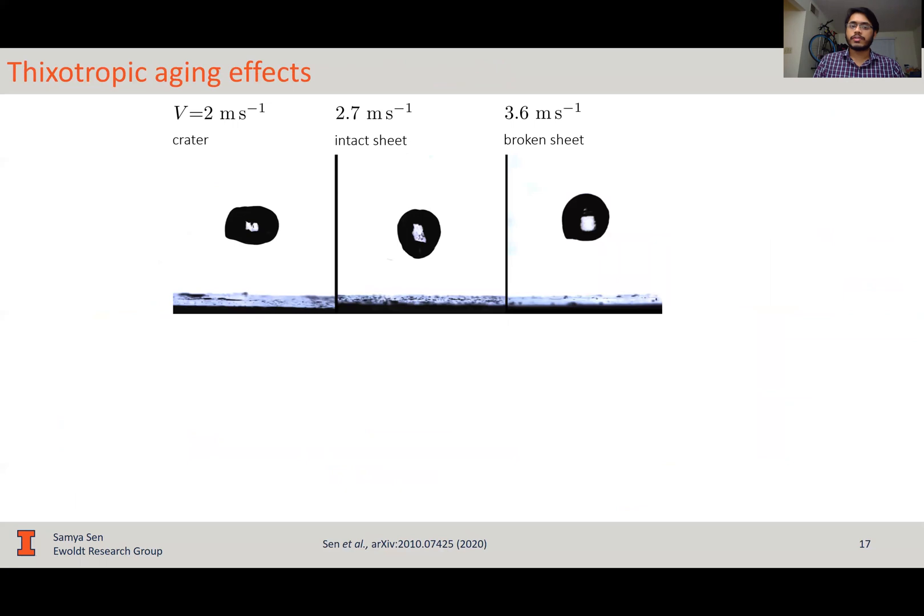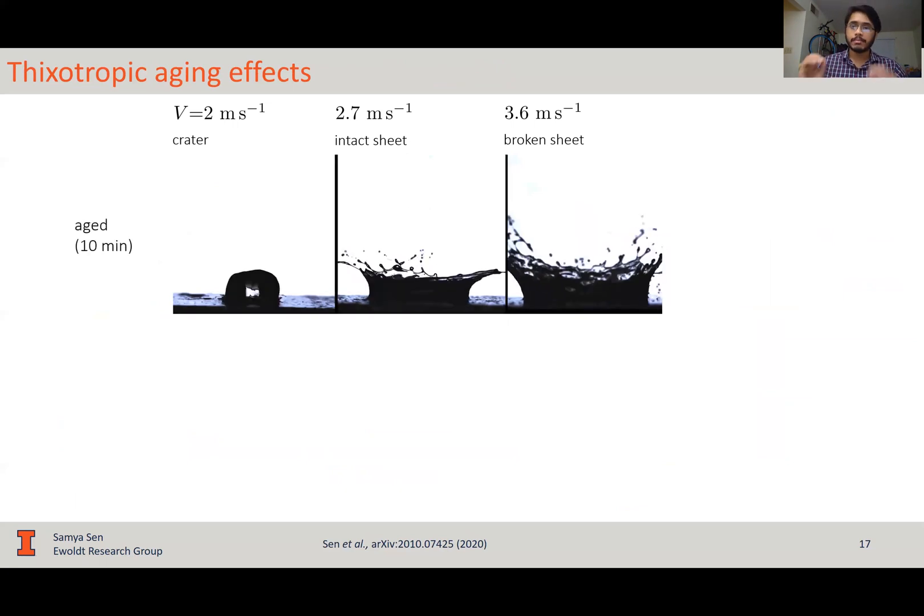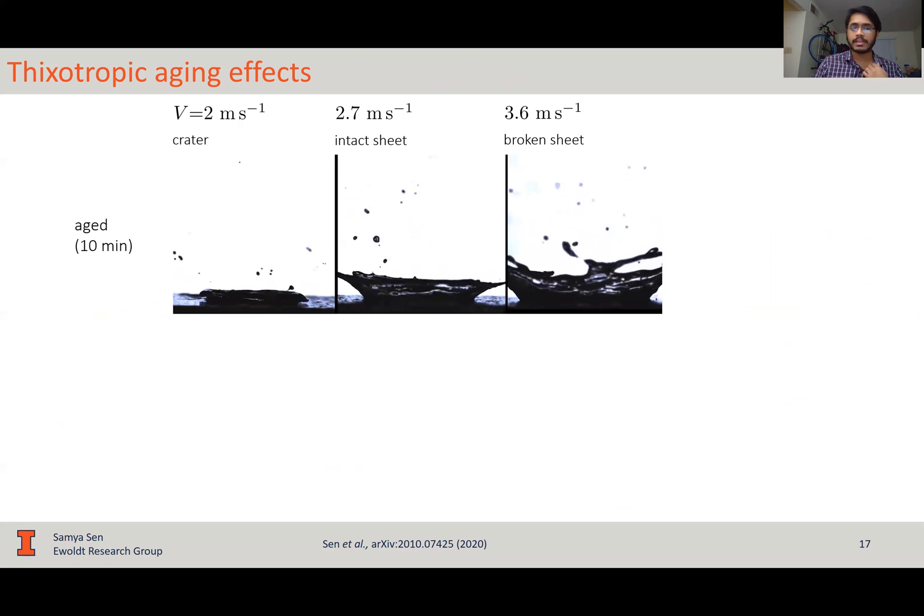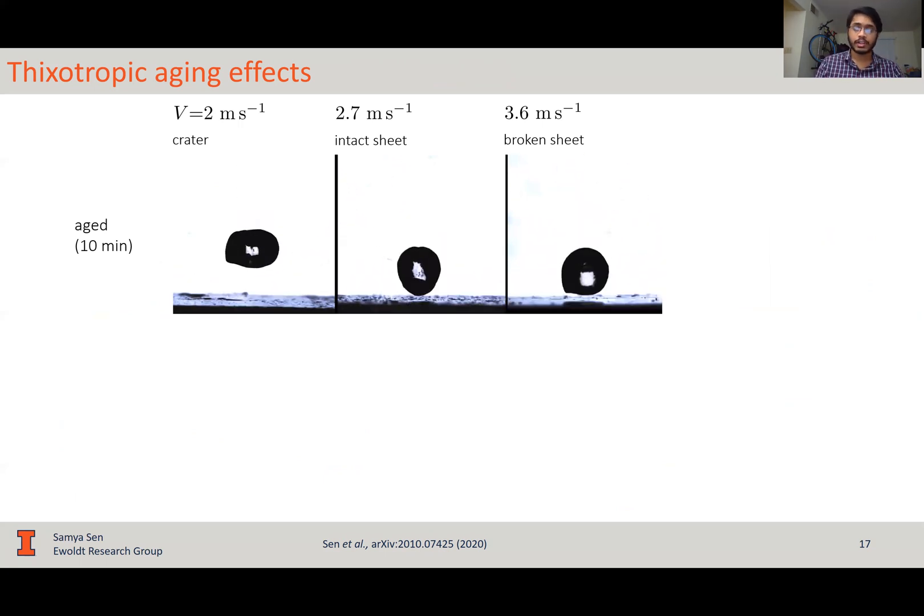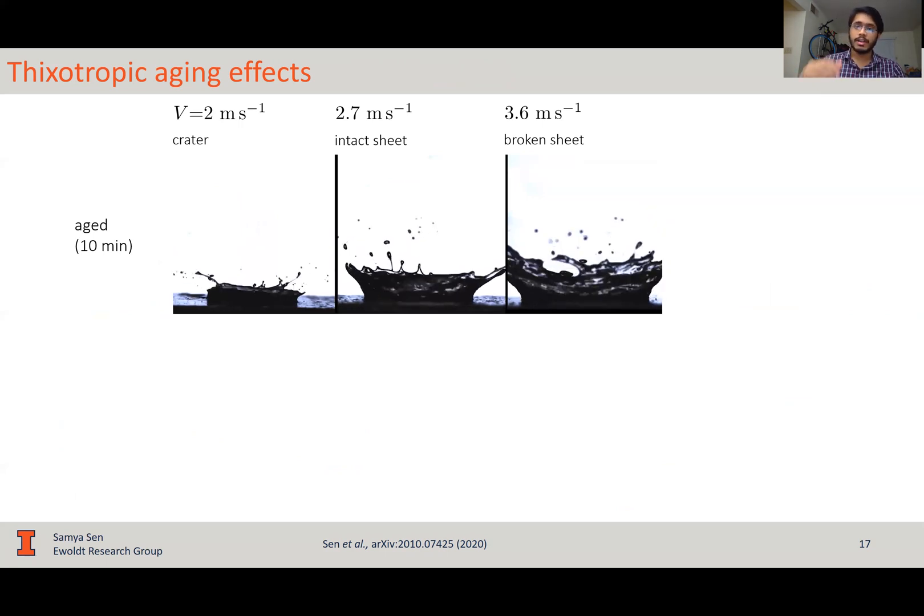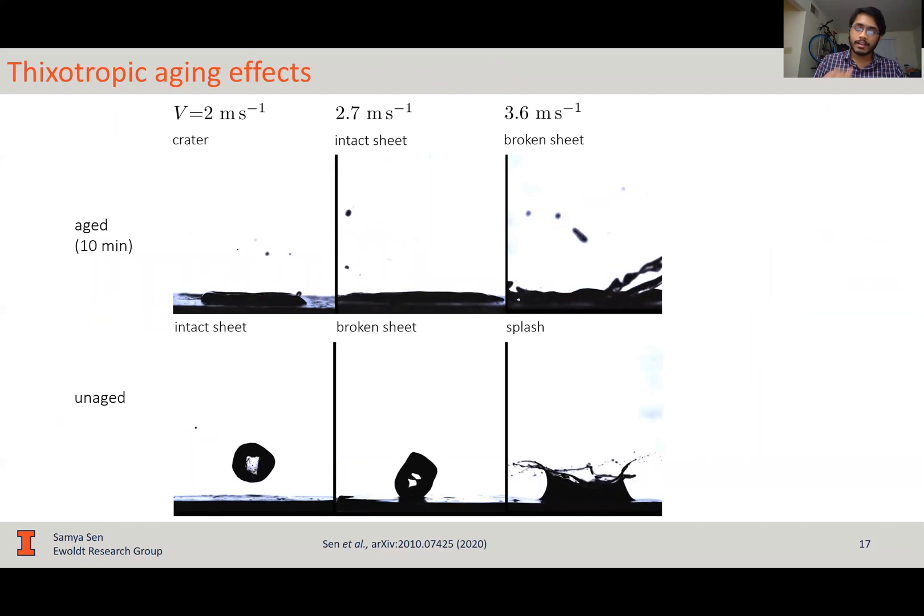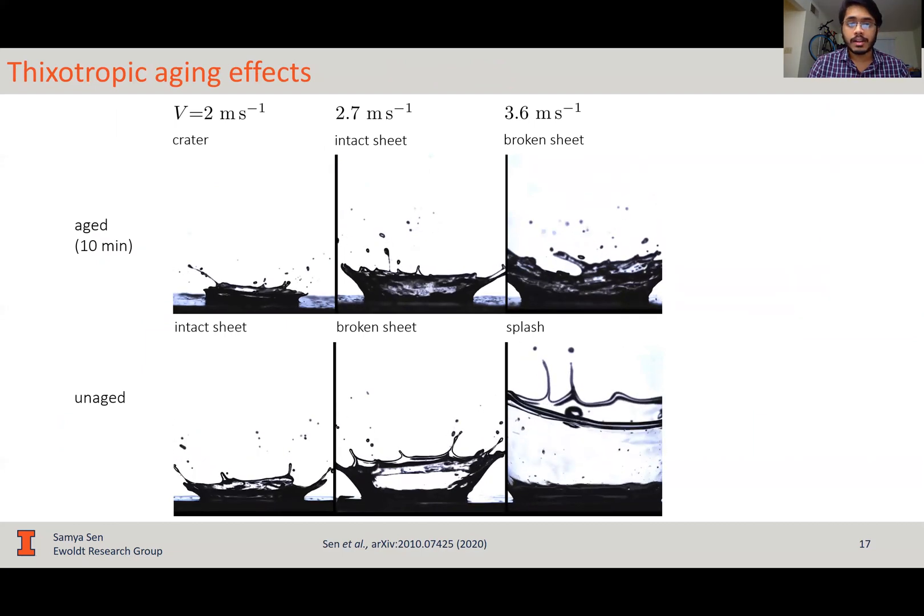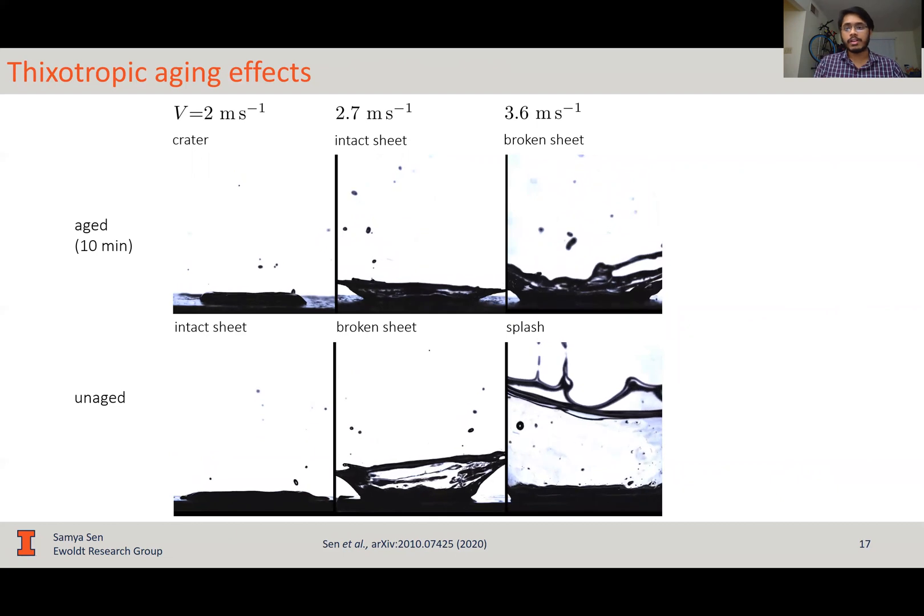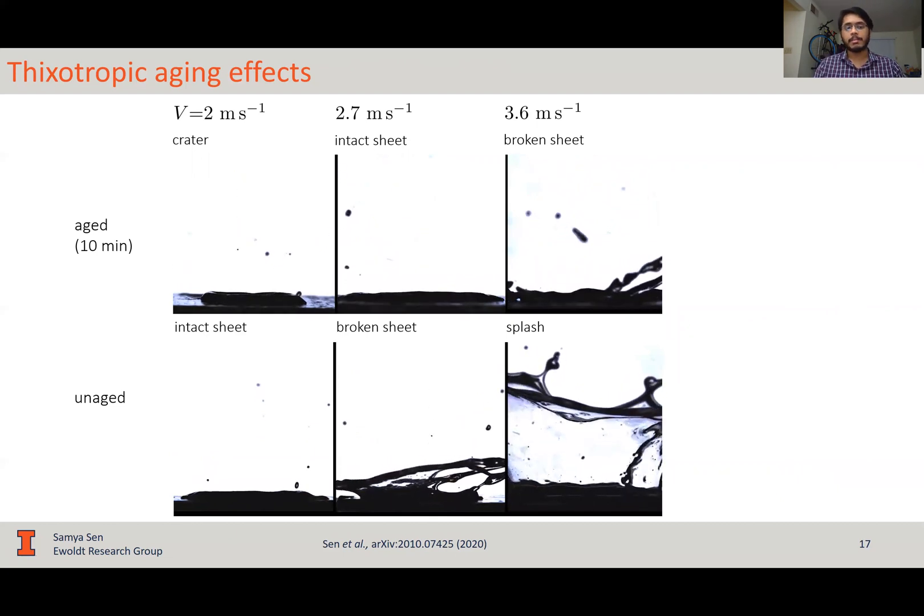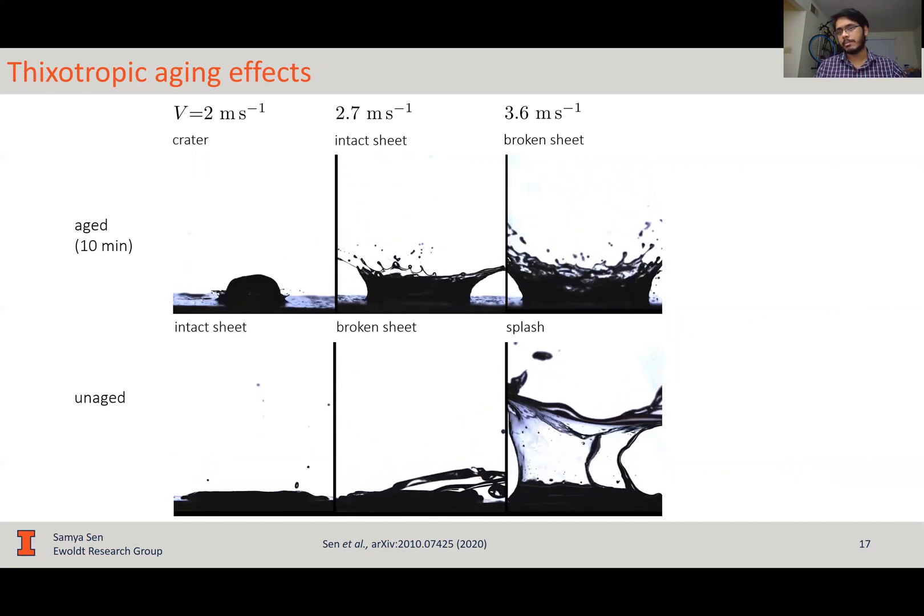Now, to show you the videos for the effect of thixotropic aging, here I'm showing the same three tests for laponite, except that now the samples are aged for 10 minutes. You pre-shear it, age it for 10 minutes, that is you let it sit at rest and then you test. You can contrast this directly with the unaged tests I've shown you before. And as you can see, for every other test condition kept constant, aged laponite splashes much less than unaged laponite.